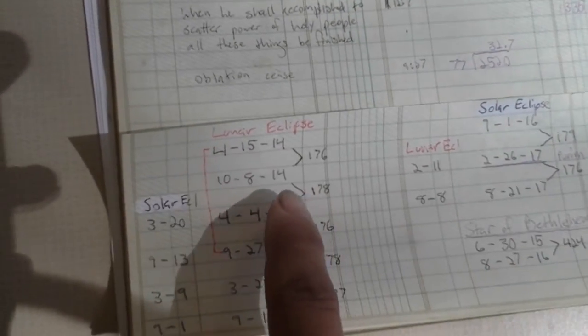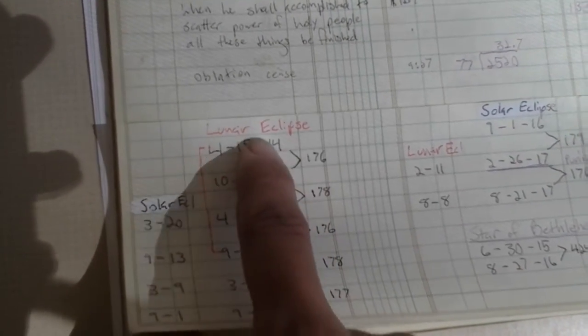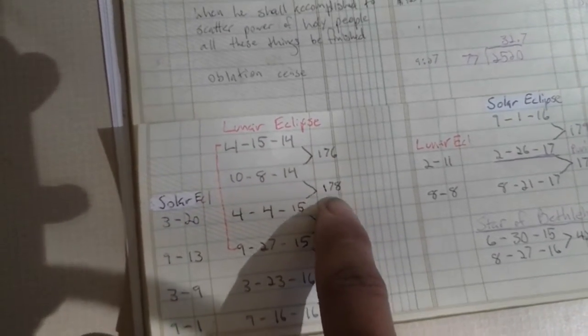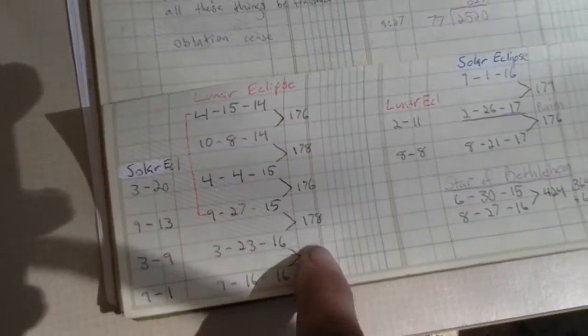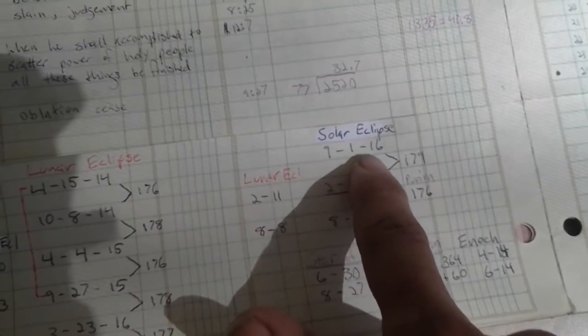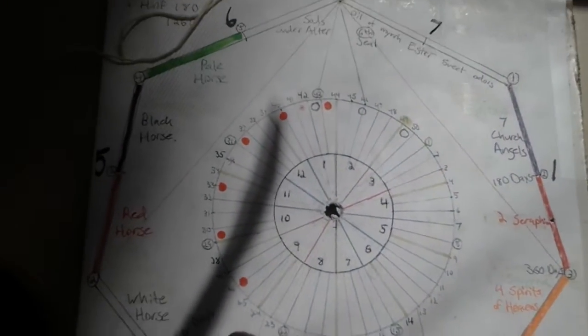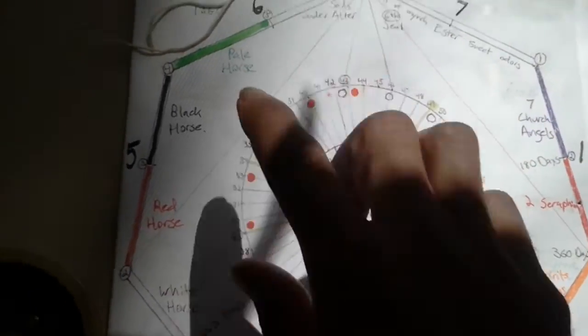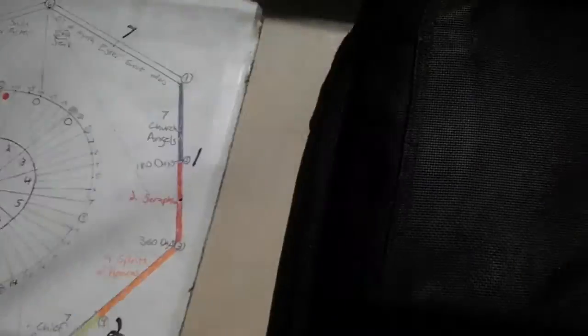The other thing you'll notice is the intervals between the lunar eclipses — 176, 178 — and the solar eclipses continue in that same pattern.